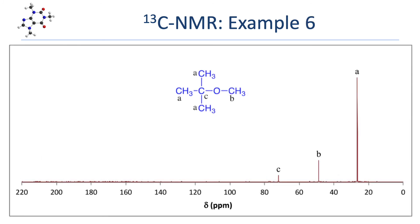In our last example, we have an ether. This molecule has five carbons but only three unique types of carbon, because the carbons labeled A are all interconvertible by free rotation along the carbon-oxygen single bond, so those three carbons show up as one single resonance. Carbons B and C are both bonded to that electronegative oxygen, pulling them into the electronegative region. Carbon C, which has three bonds to carbon, is pulled to a slightly higher frequency relative to carbon B, which is bonded to three less electronegative hydrogen atoms. The three equivalent A methyl carbons give rise to one single resonance in the generic region below 50 ppm.